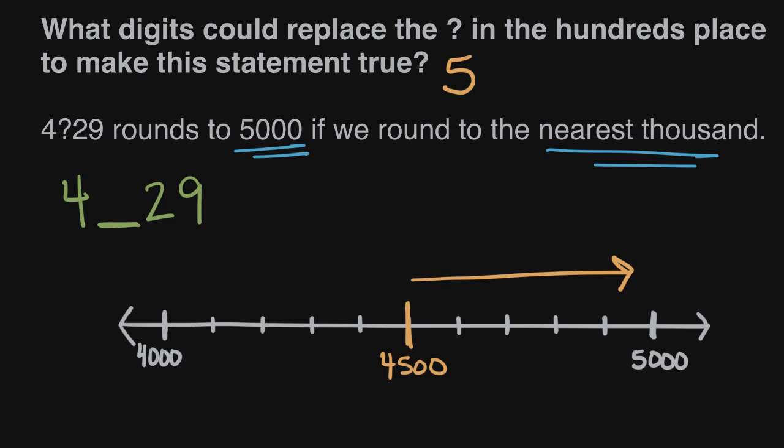And then we know 4,529 works. That's big enough, so anything bigger will only get closer to 5,000. Anything bigger than five in the hundreds place will only move us closer, farther to the right. So any digit five or greater would work here, would round up to 5,000.